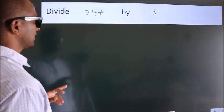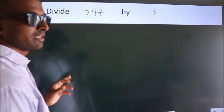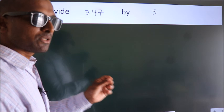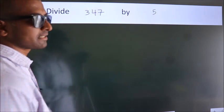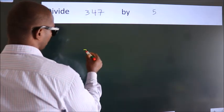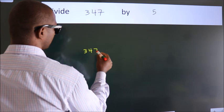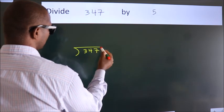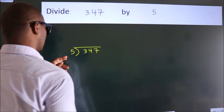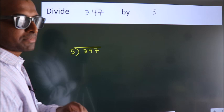Divide 347 by 5. To do this division, we should frame it in this way: 347 here, 5 here. This is your step 1.